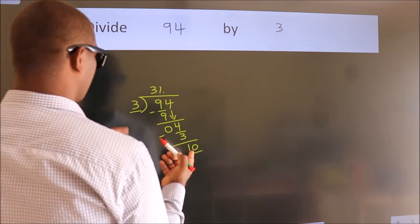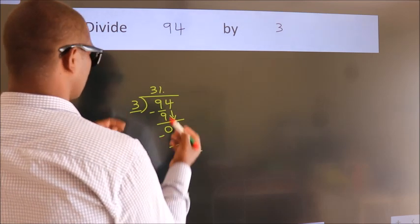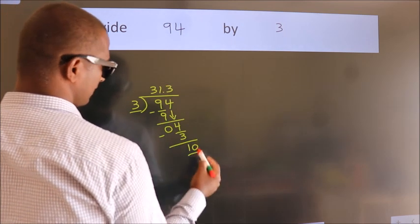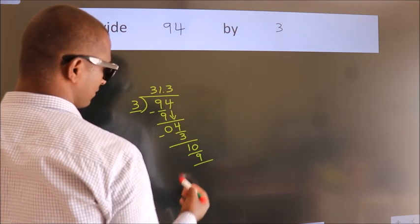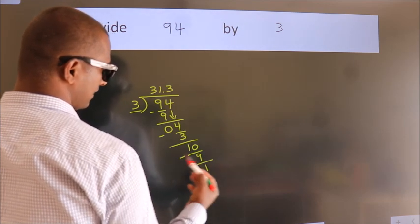A number close to 10 in 3 table is 3, 3 times 3 is 9. Now we subtract. We get 1.